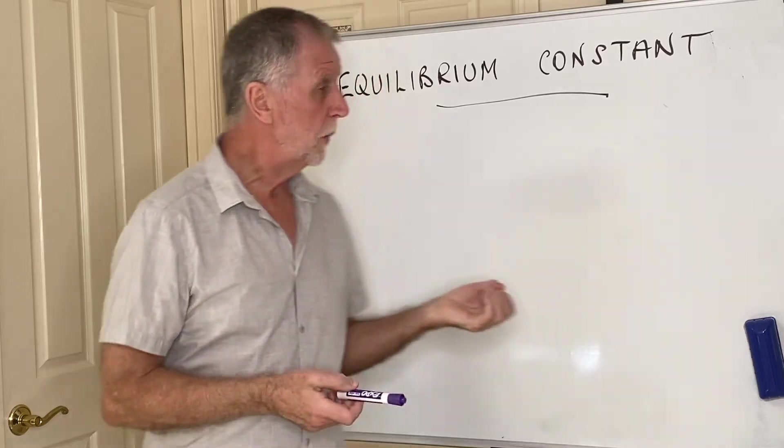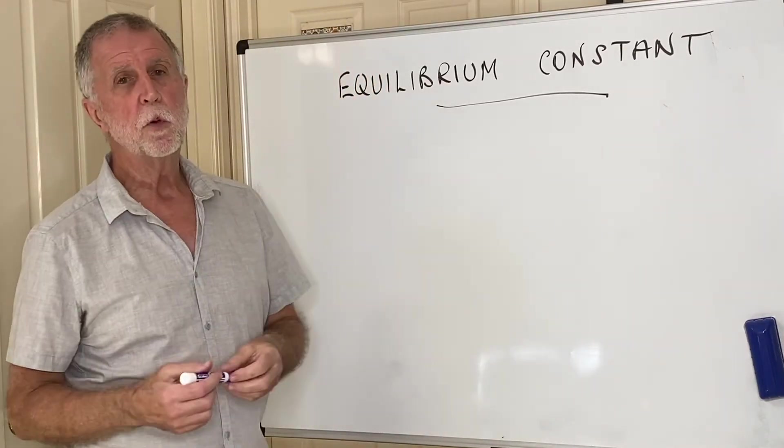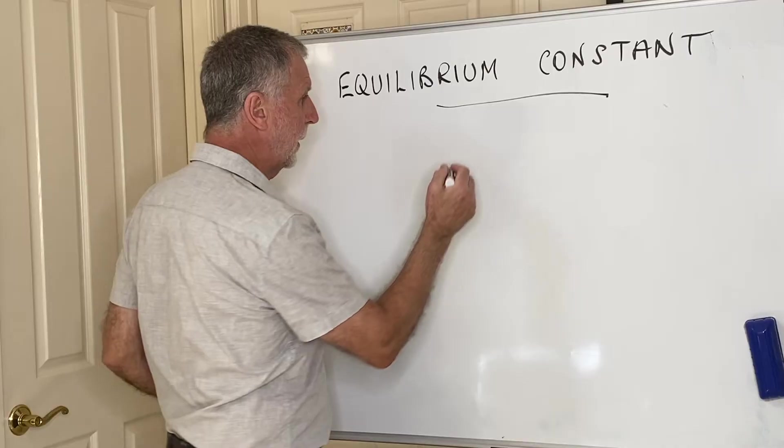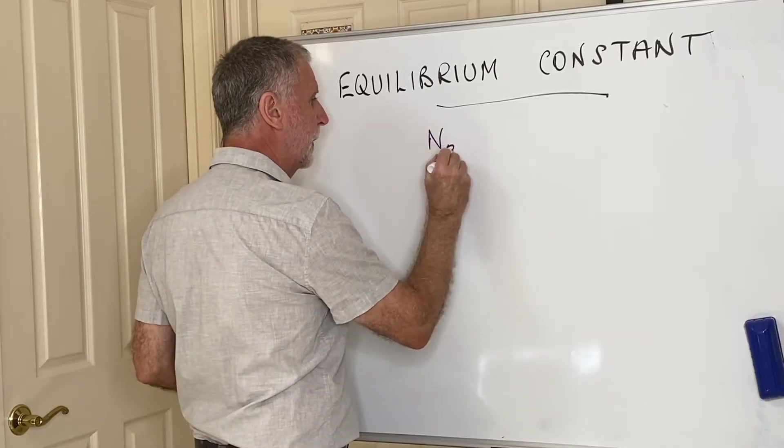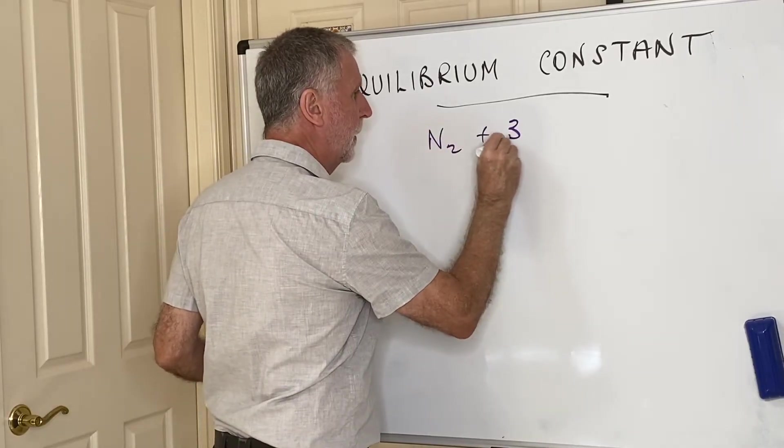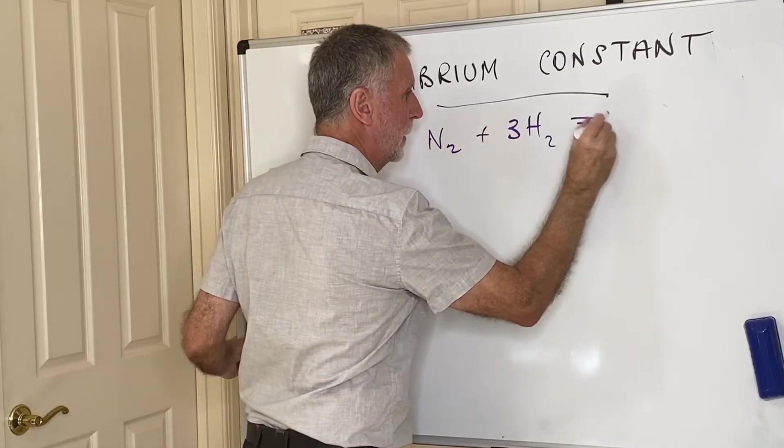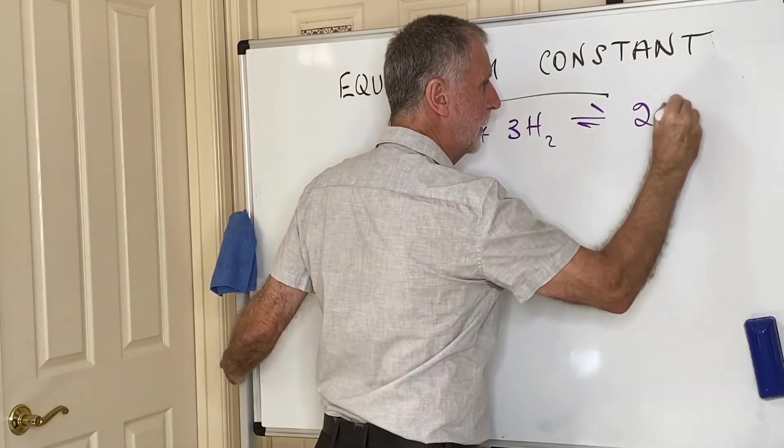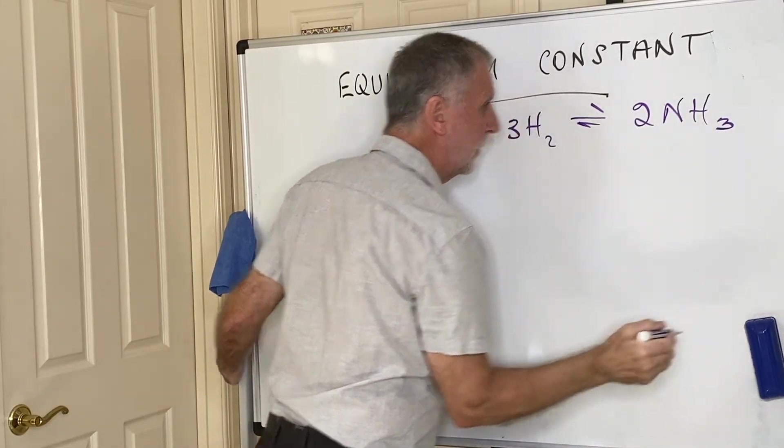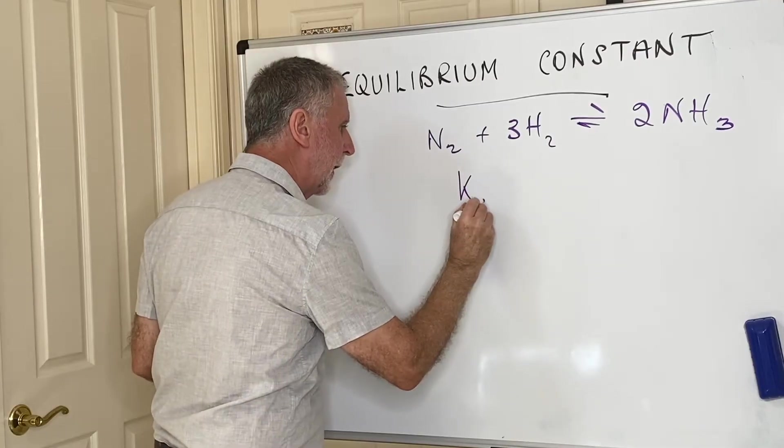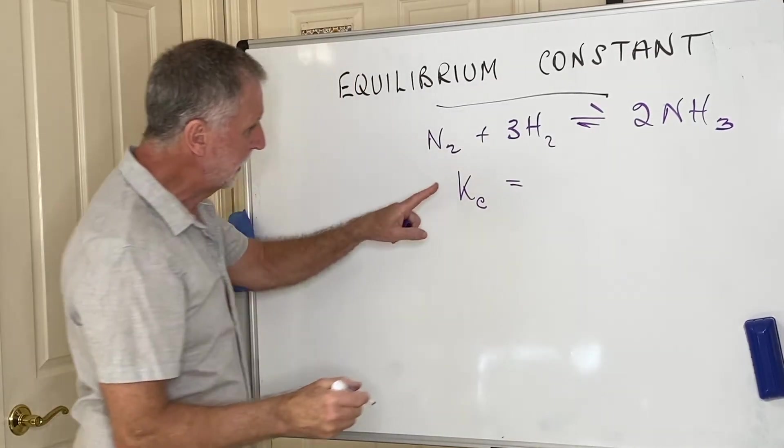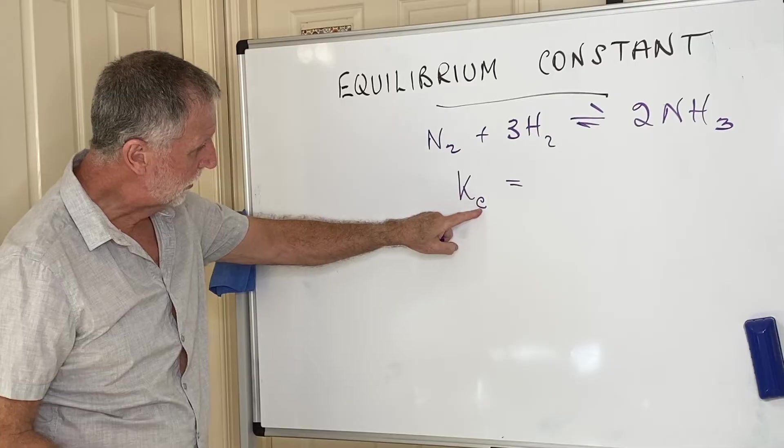To do that we have to introduce something called the equilibrium constant. If I now use my Haber process again, nitrogen plus hydrogen makes ammonia, then we are going to write a Kc, an equilibrium constant in terms of concentration for this reaction.